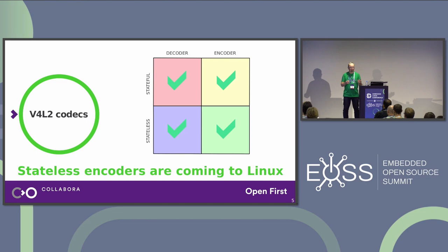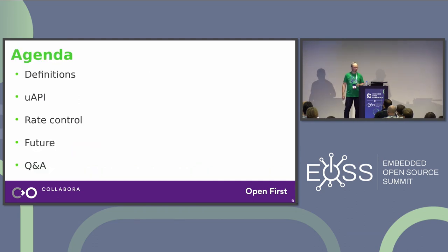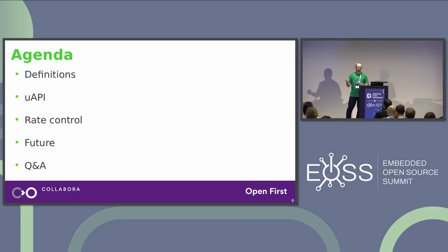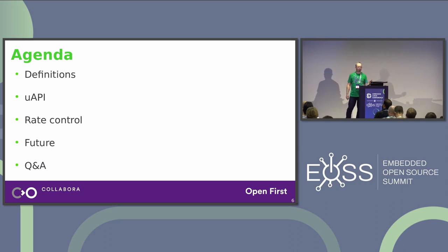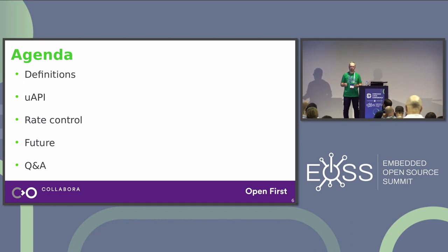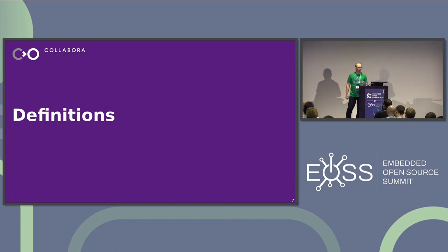2023 is the 1971 of video codecs in Linux because stateless encoders are coming to Linux. By the end of this talk you will understand the difference between stateful and stateless and be able to use stateless encoders. We will cover the user space API, rate control, and possible future directions, finishing with a Q&A session.